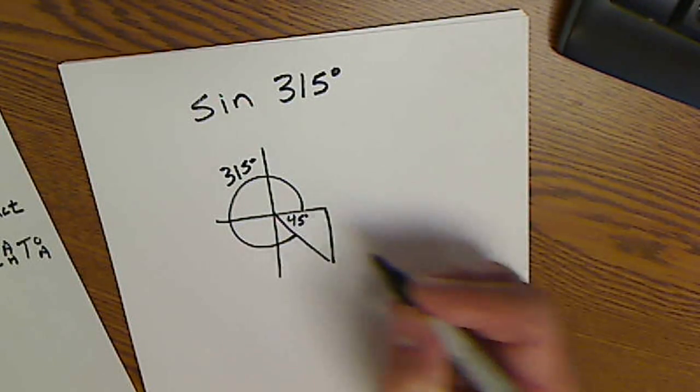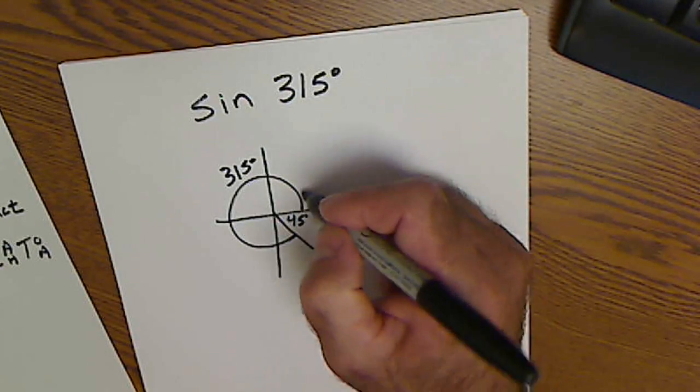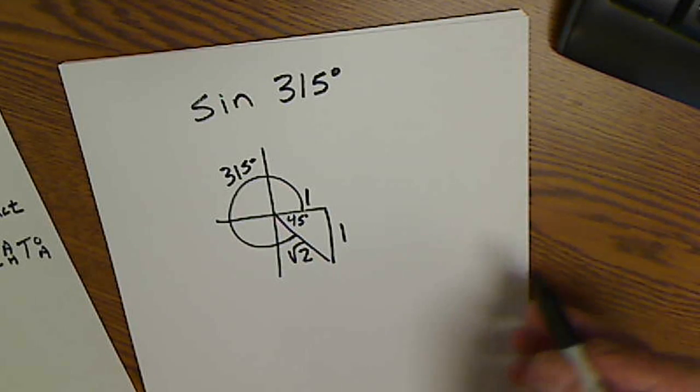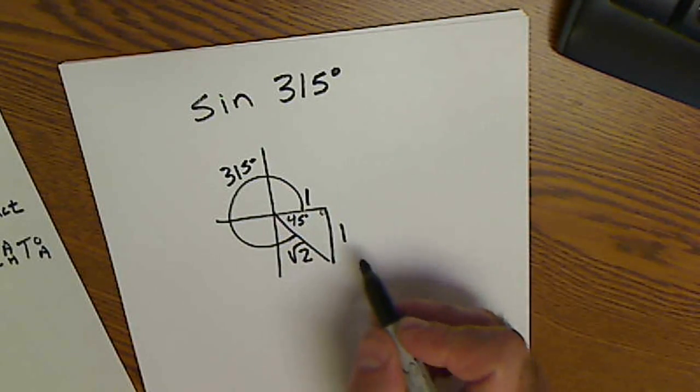45, isosceles right reference triangle, 1, 1, root 2. Step 4, double check negatives. I go over positive, I go down, so this is a negative.